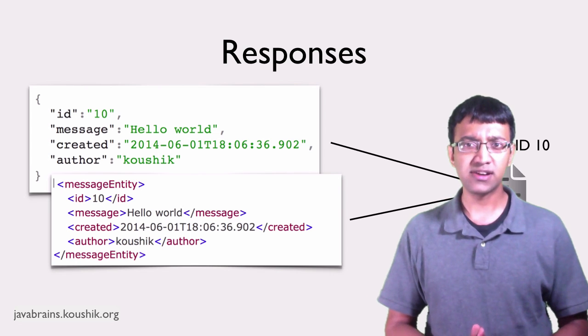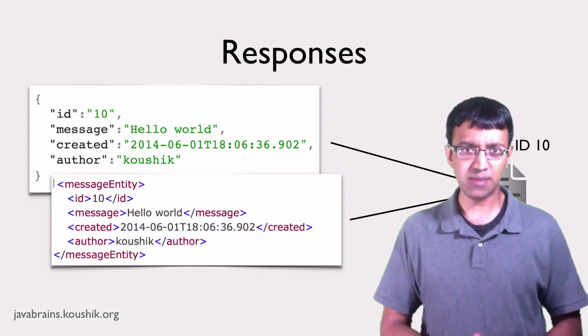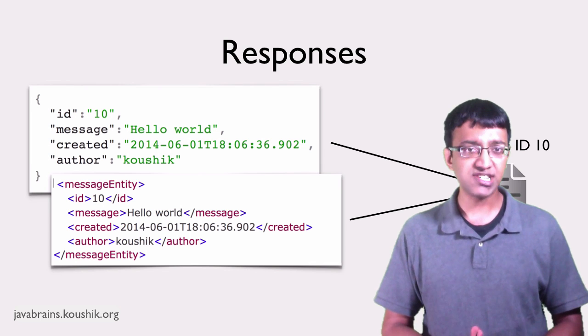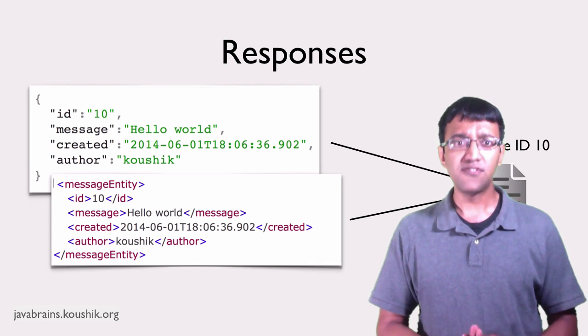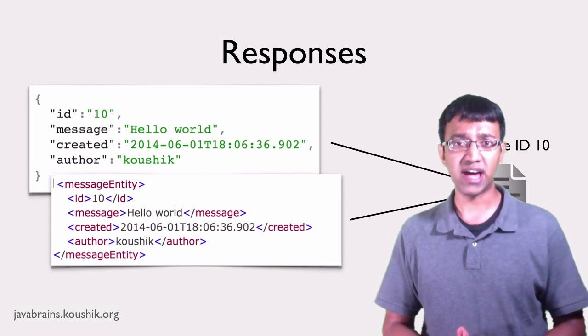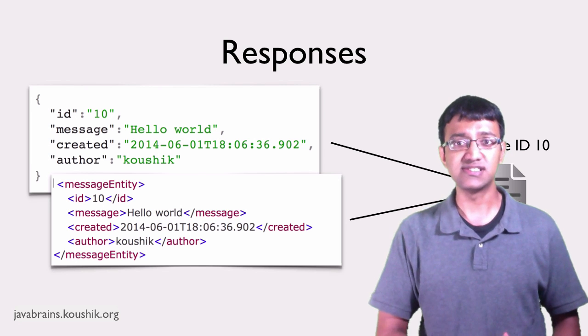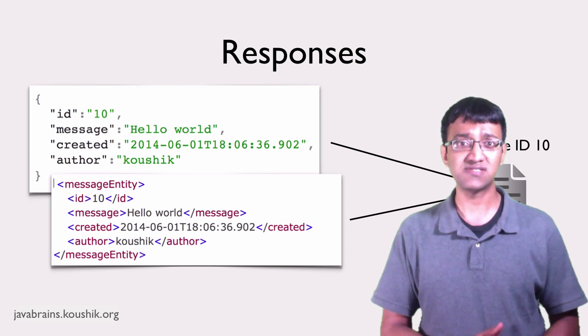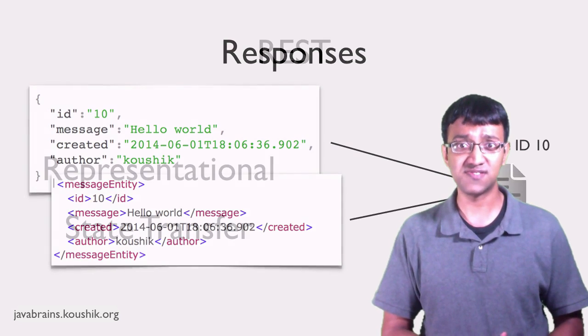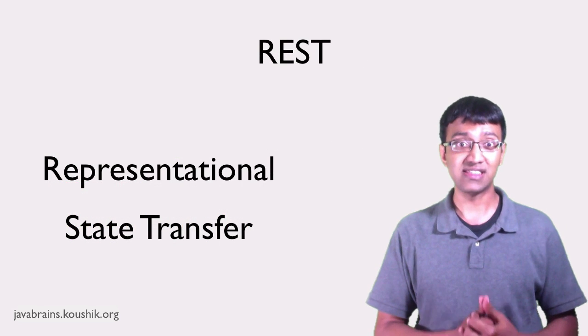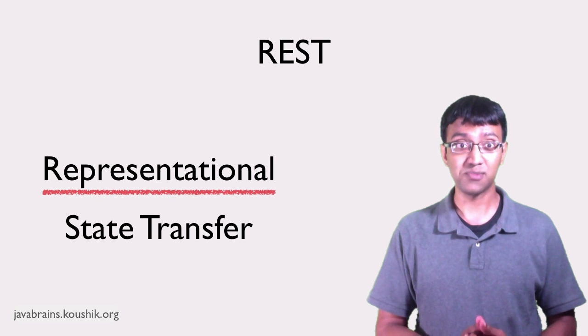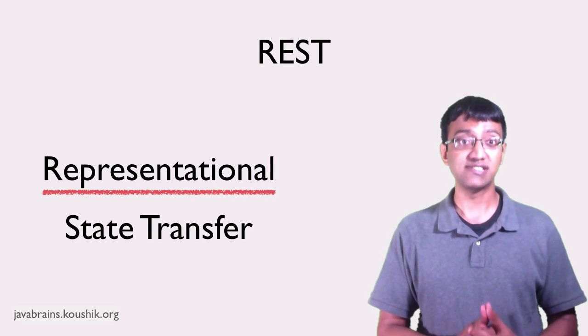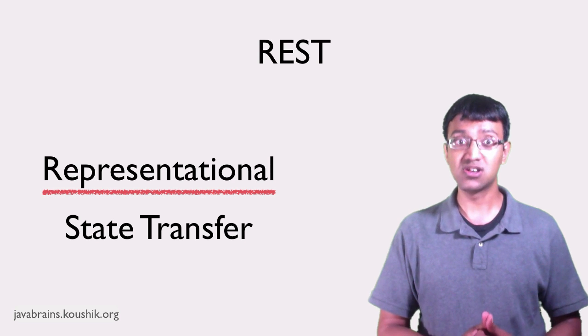There's actually a very important thing to remember. When you make REST API calls, you're sending or receiving representations of the resource. Different representations could have different formats, even though the underlying resource is the same. This is actually how REST gets its name. REST stands for Representational State Transfer. So you're transferring the representational state. When you make REST API calls, you're sending or receiving representations of a resource.